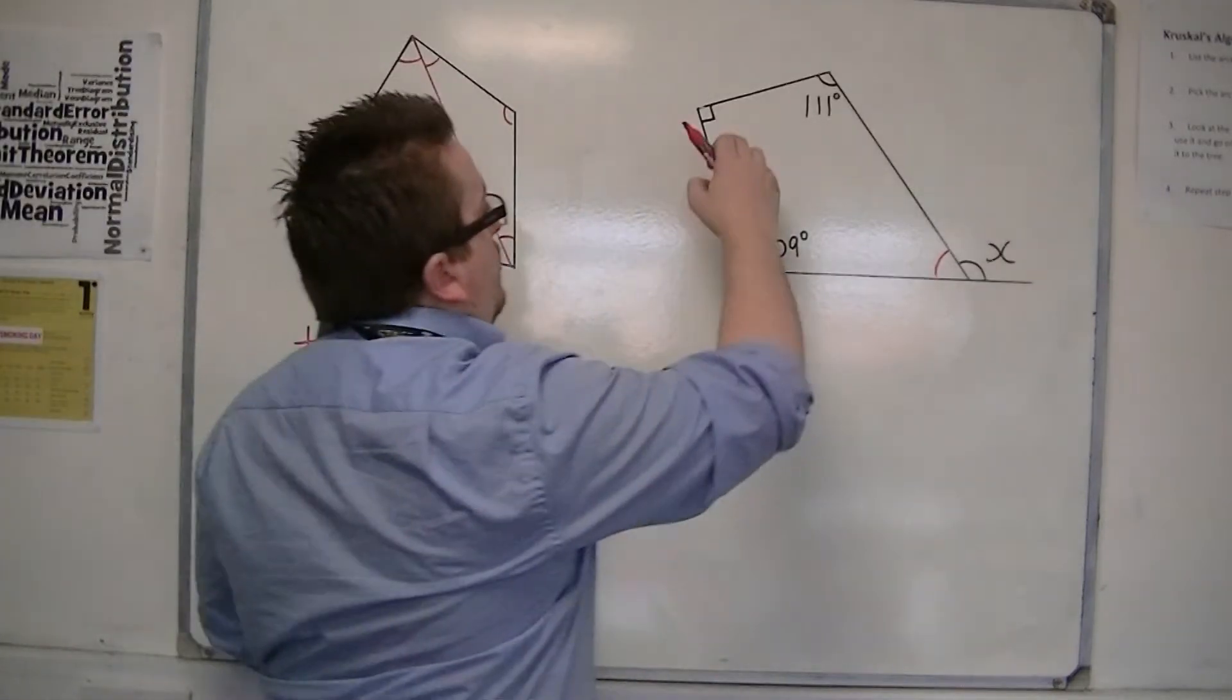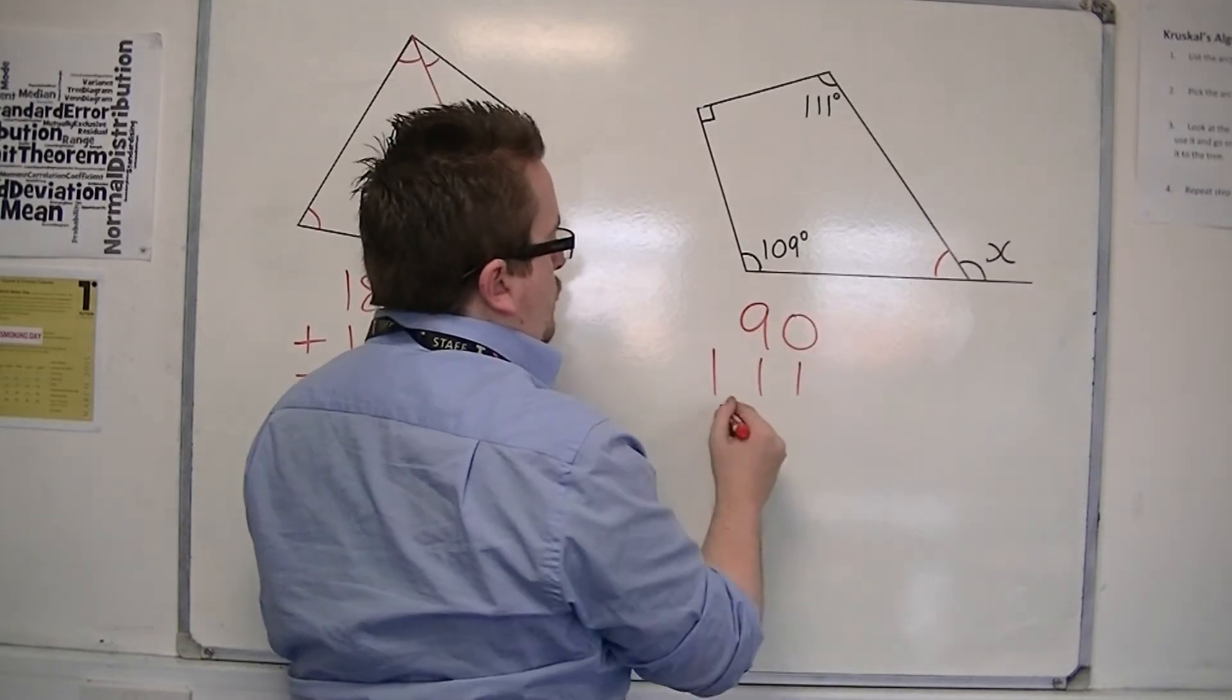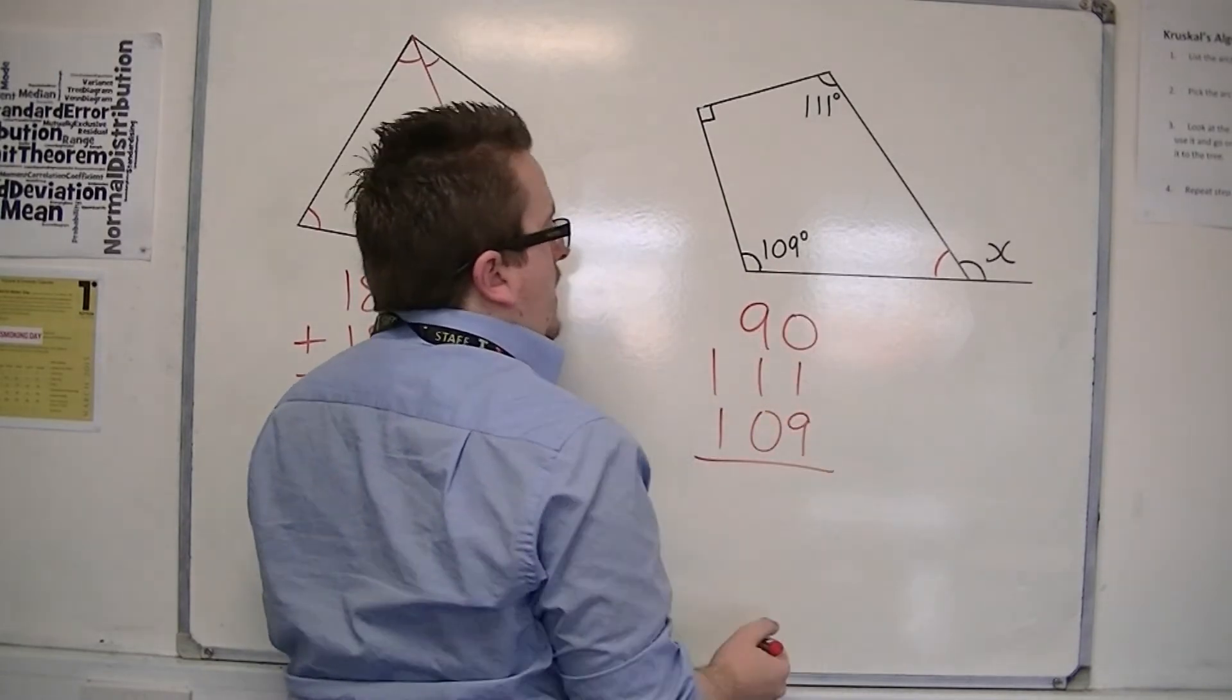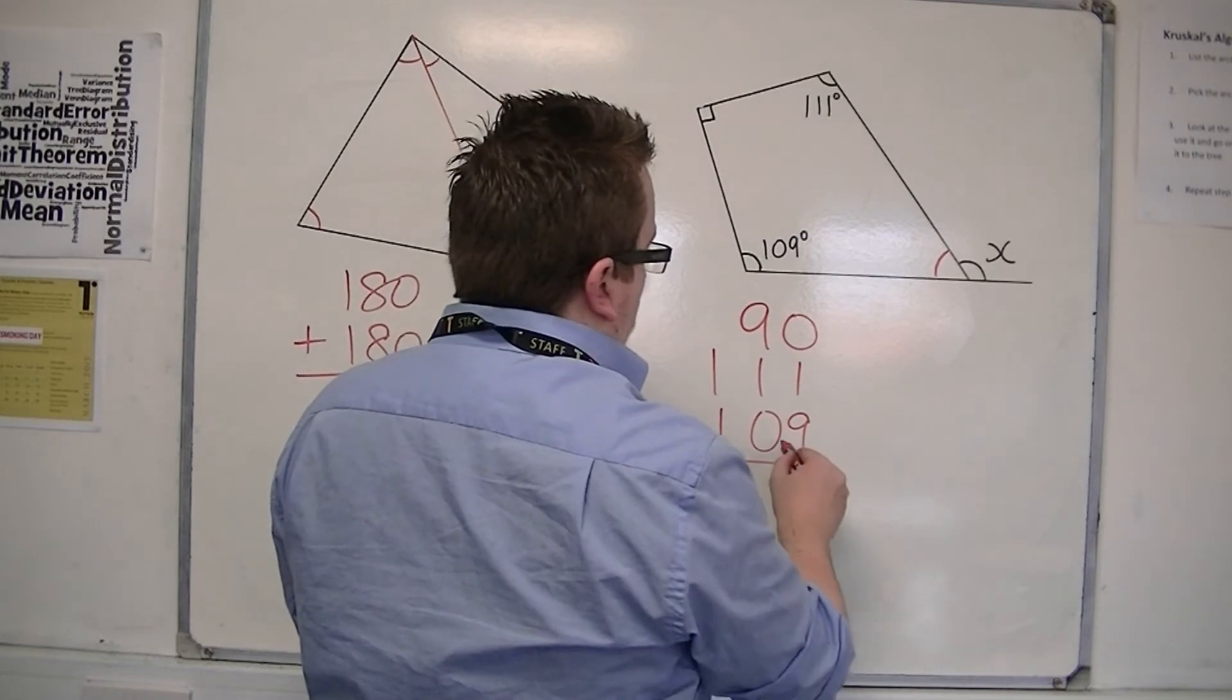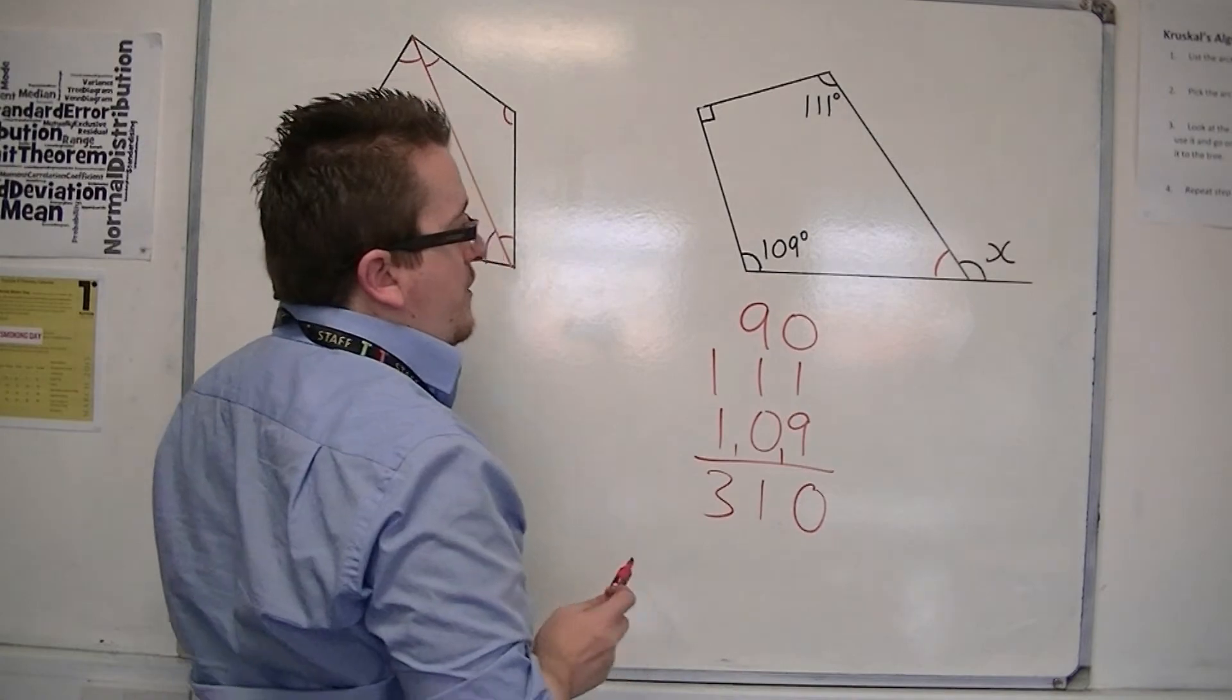So I know that I have a 90 degree angle, 111, and 109. These add up to, well that's 1, 9 is 10, that's 2, that's 11, and that's 3, so 310 degrees.